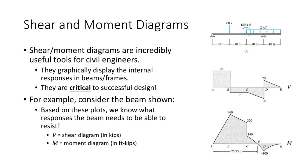What these diagrams tell you is what you need to be designing for. As an engineer, you care about the maximum magnitude of shear — so you'd design for 46 kips, the maximum shear. For moments, you care not just about magnitude but also direction, because it matters whether the beam is bending in a positive or negative direction. Once you understand the graphical process, it's actually a very simple idea.